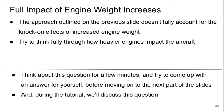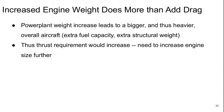Welcome back to part 4 of Lecture 13 of Aerospace Propulsion. Let's think about the full impact of what happens when the engines get heavier. Increasing the engines does more than just add drag. If we increase the power plant weight, it leads to a bigger and thus heavier overall aircraft, which means we have to have extra fuel capacity, which means we have extra structural weight. The thrust requirement then goes up even more, leading to increasing the engine size even further.